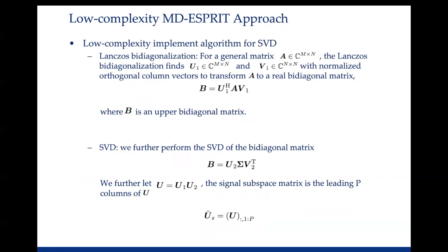The low-complexity implementation algorithm for the SVD has two steps. The first step is Lanczos bidiagonalization. For a general matrix A with dimension M by M, Lanczos bidiagonalization computes matrices U1 and V1 with normalized orthogonal column vectors to transform A into a real bidiagonal matrix, as shown in the equation where B is an upper bidiagonal matrix. The second step is the SVD of the bidiagonal matrix B. Since B is a real bidiagonal matrix, the SVD of B can be implemented with O(n²) computations. We then let U equal U1 multiplied with U2, and the signal subspace matrix is the leading P columns of U.